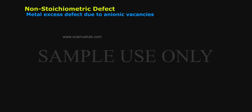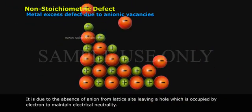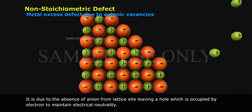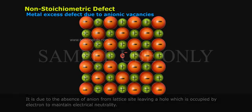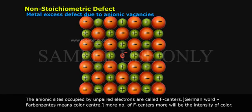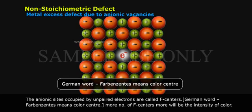Metal excess defect due to anionic vacancy. This defect is due to the absence of an anion from a lattice site, leaving a hole which is occupied by an electron to maintain electrical neutrality. The anionic sites occupied by unpaired electrons are called F-centers, from the German word 'Farbzenters,' meaning color center. More number of F-centers, more will be the intensity of color.